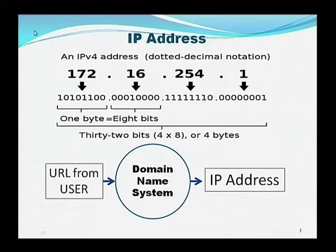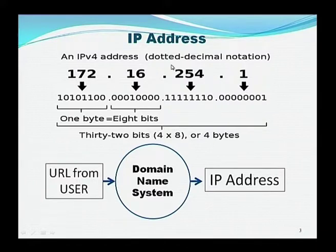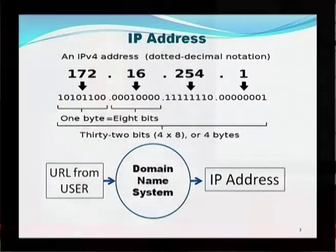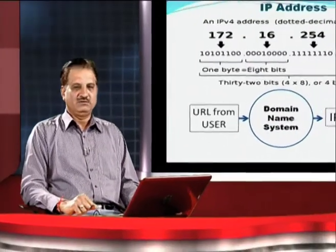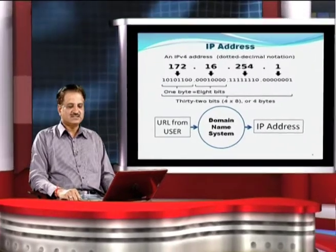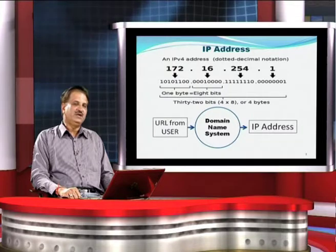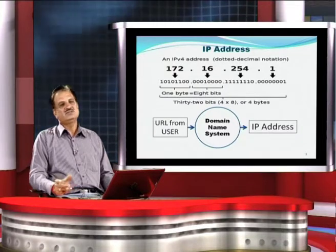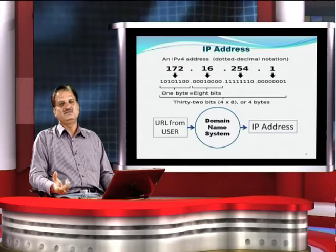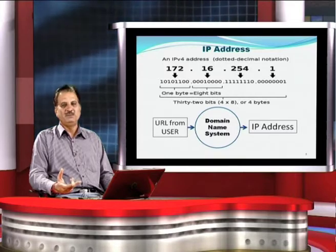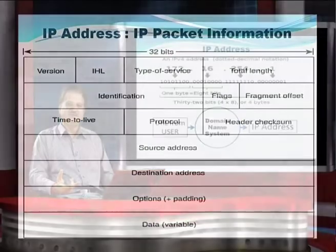Here is an IP address: 172.16.254.1. There are 4 different segments uniquely combined to find any particular resource over the internet. When we provide a domain name, there is a system called the Domain Name System which converts this domain name into the corresponding IP address. Therefore, there is no necessity for us to remember this kind of numeric value — it is handled by the Domain Name System.